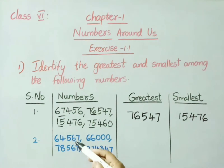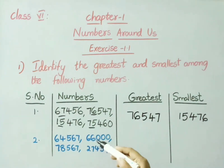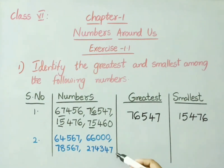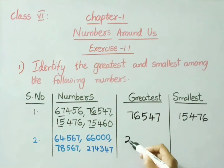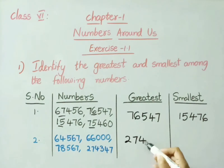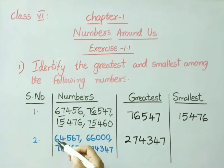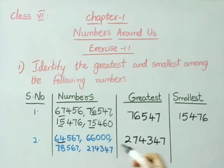See the second question: 64,567; 66,078,567; 2,74,347. Here, 66,000 value is greatest. So, write down that value. 2,74,347 and the least value is 64,567.